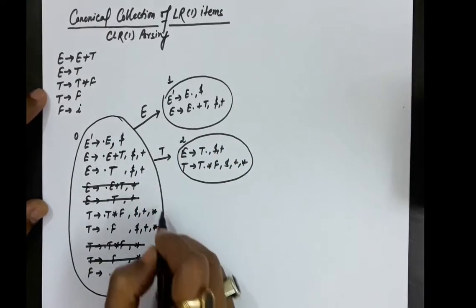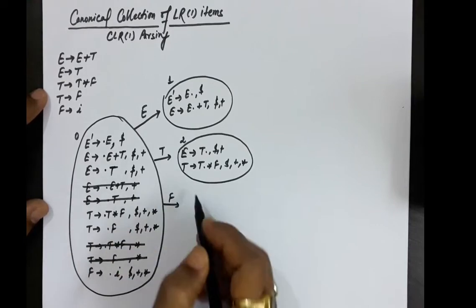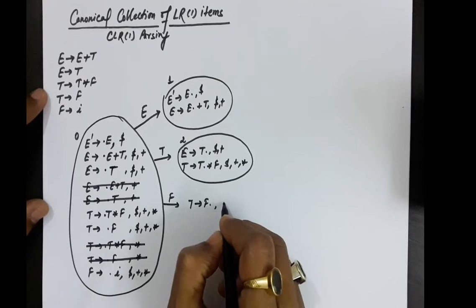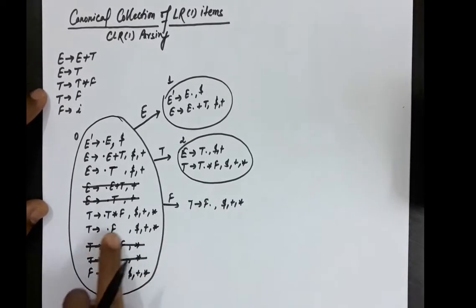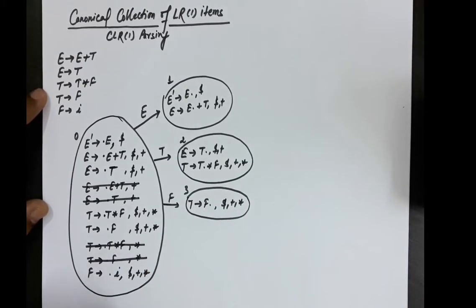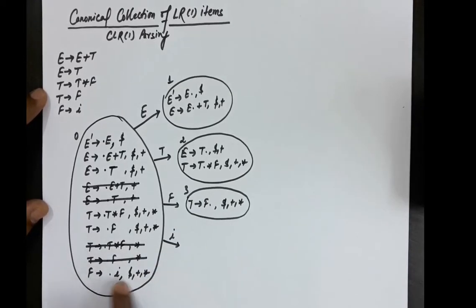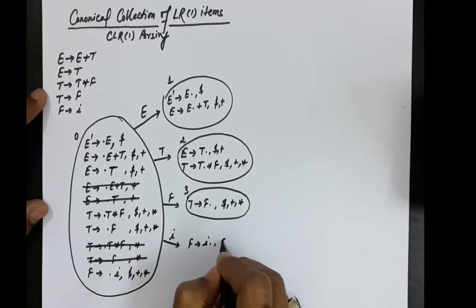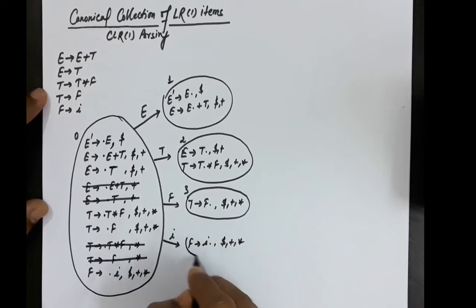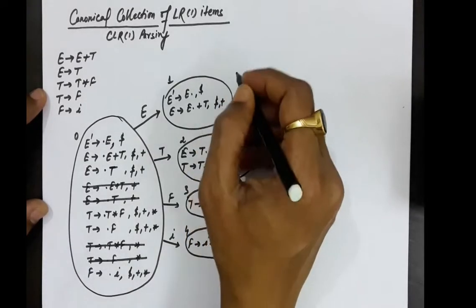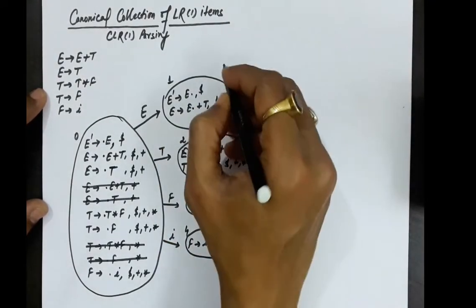This is state number 2. Taking capital F: T produces F dot with lookaheads dollar, plus, and multiplication sign. This is state number 3. Taking i: F produces i dot with lookaheads dollar, plus, and multiplication sign. We will now see the transitions from state number 1.